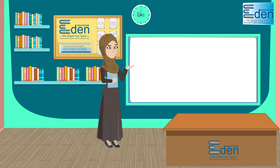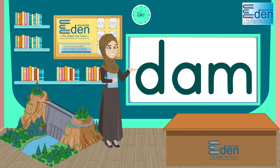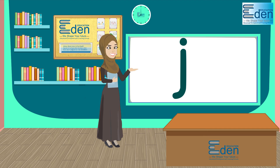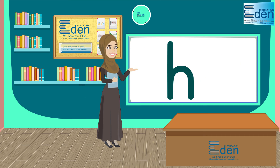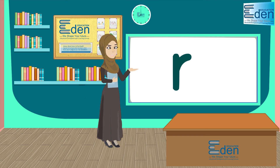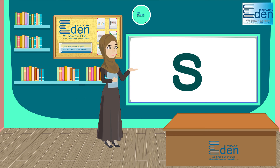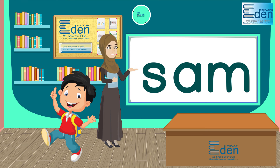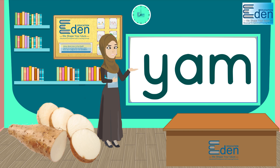Children, let us see M family words with related pictures. D, M, Dam. J, M, Jam. H, M, Ham. R, M, Ram. S, M, Sam. Y, Am, Yam.